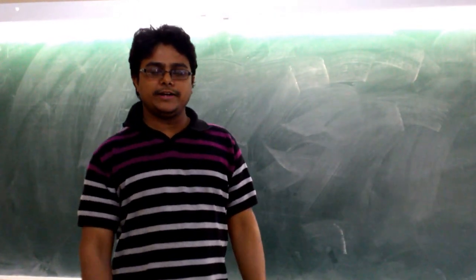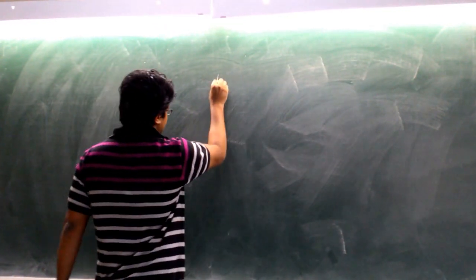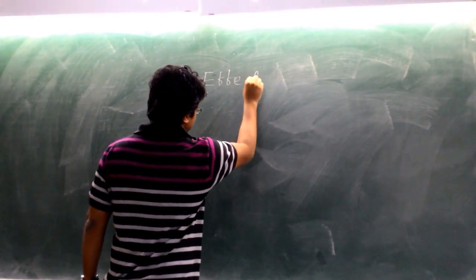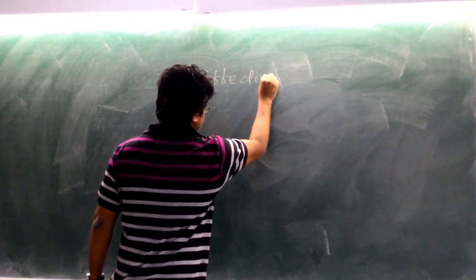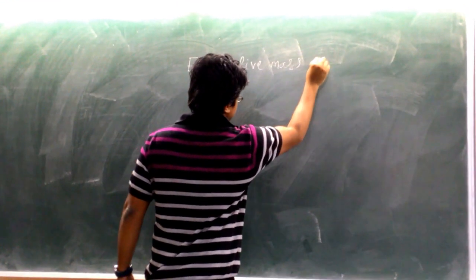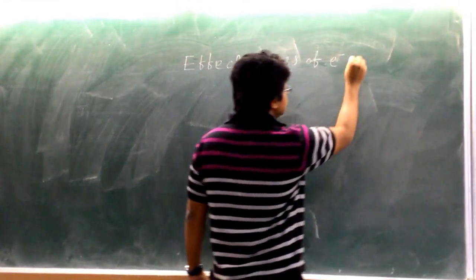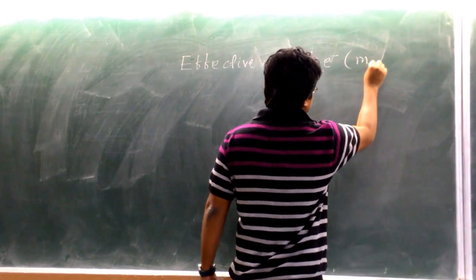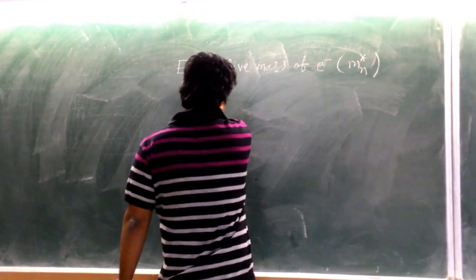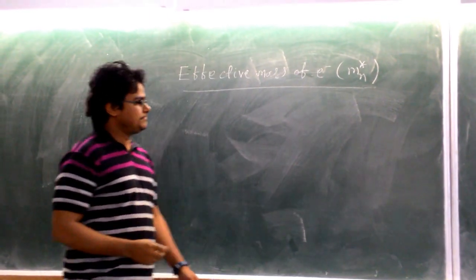How to find out the effective mass of an electron? The notation used to denote the effective mass of an electron is M* (M-star).